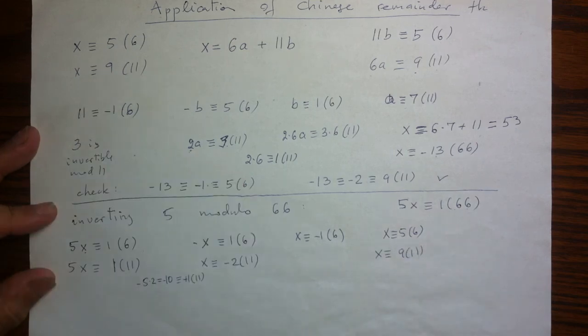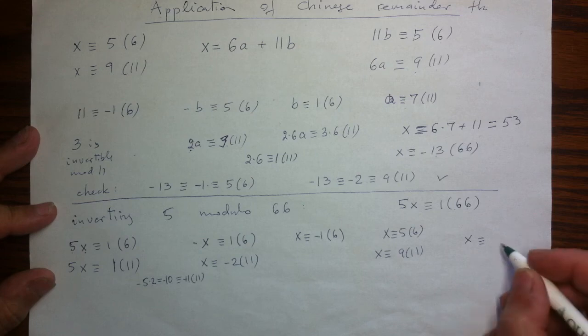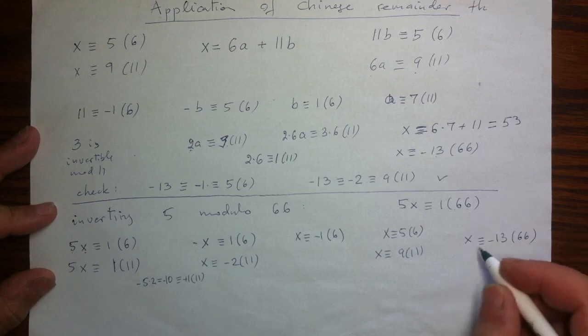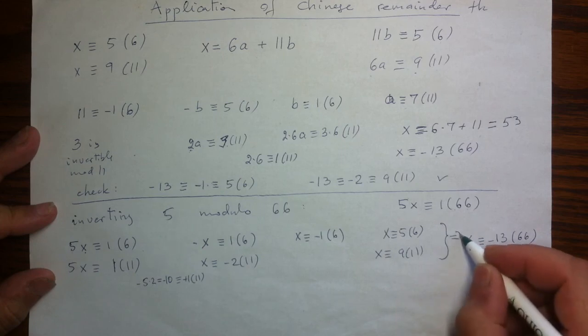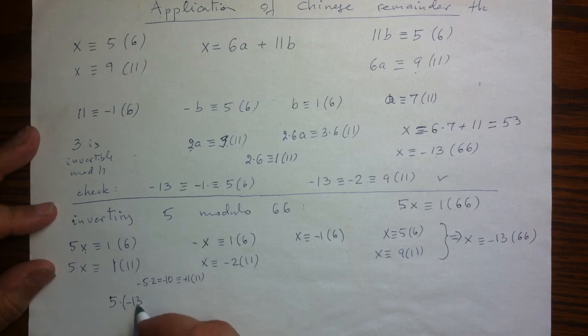Just the conditions we had. So the answer we found is either negative 13 or 53. I will take negative 13 because it is going to be easier to verify. Again, I'm going to verify that this indeed is my inverse. So what I need to see is that 5 multiplied by negative 13 is going to be congruent to 1 mod 66.